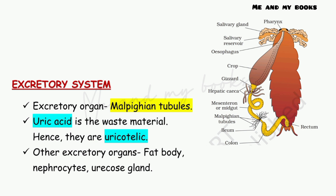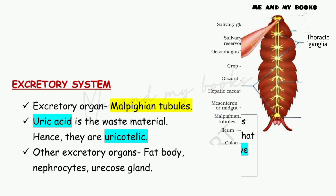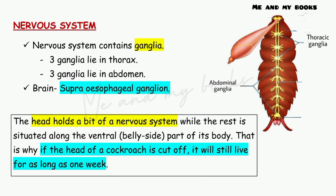The excretory organ is Malpighian tubules, which we already discussed. Uric acid is the waste material in cockroach; hence they are uricotelic organisms. There are different types of waste materials like ammonia, urea, and uric acid, but the waste material of cockroach is uric acid. Other excretory organs include fat body, nephrocytes, and uricose glands.